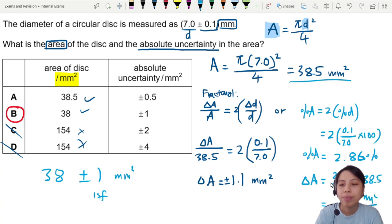1.1 millimeter square. So two methods, up to you which one you want to use. Even better if you know how to use both. But that's all for this uncertainty question.